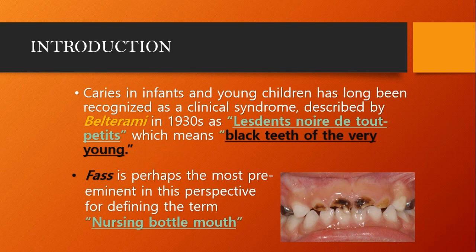Caries in infants and young children has long been recognized as a clinical syndrome. It was described by Beltrami in the 1930s as 'Les Dents Noirs de Petits,' which means 'Black Teeth of the Very Young.' Fast is perhaps the most prominent in this perspective for defining the term nursing bottle mouth.